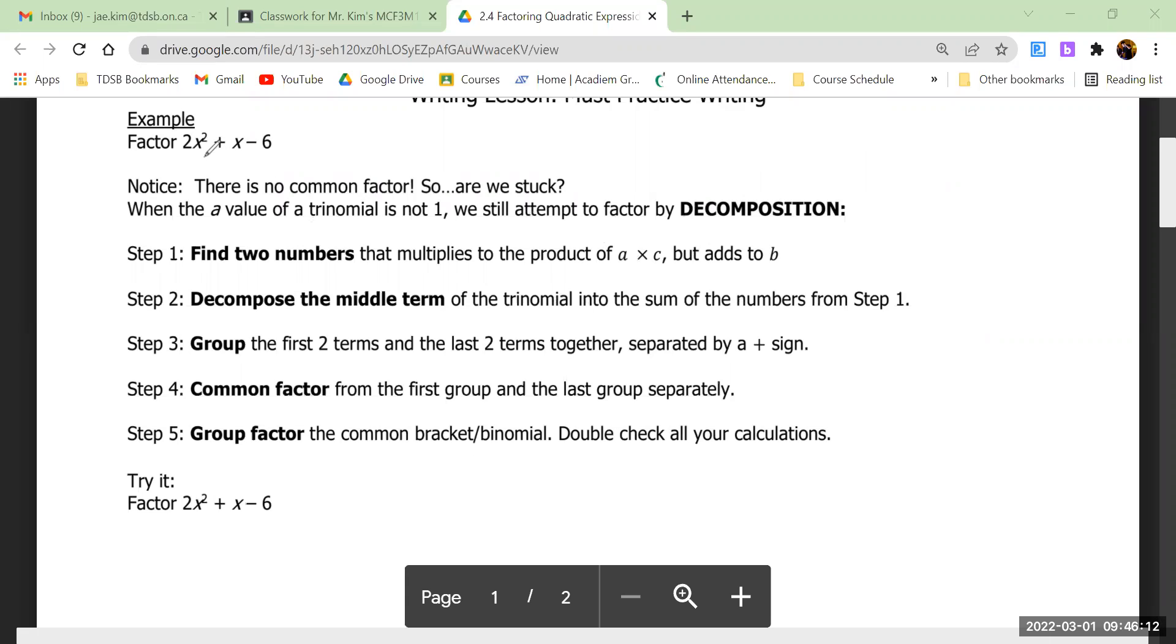For example, if I were to try to divide the 2 out, I would get something like this: 2 divided by 2 is 1, 1 divided by 2 is 0.5, and 6 divided by 2 is negative 3. That's not something I want to factor.